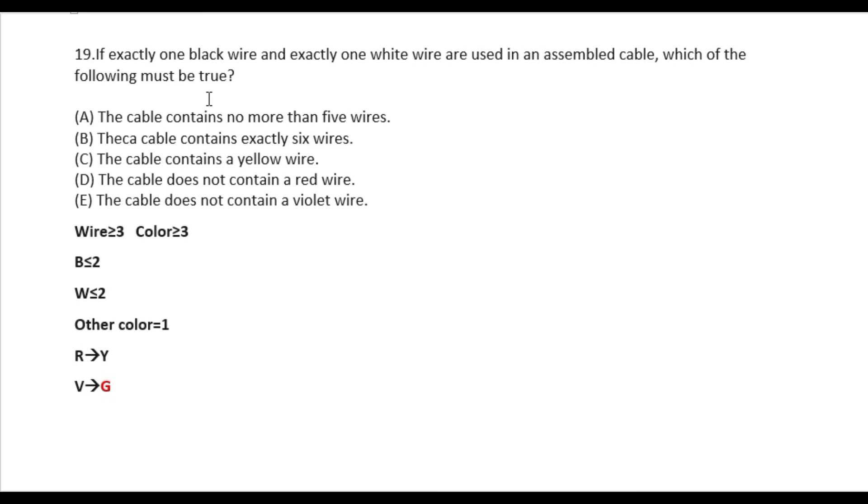If exactly one black wire and exactly one white wire are used in an assembled cable, which of the following must be true? As for the current assembled cable, this is the black and white color of cable. The cable contains no more than 5 wires. Ok. So it's black and white. Now, the color of the white color. And the other color is like red, yellow, violet, green. These are the best 3 colors. So the cable contains no more than 5 wires, so option A has to do.